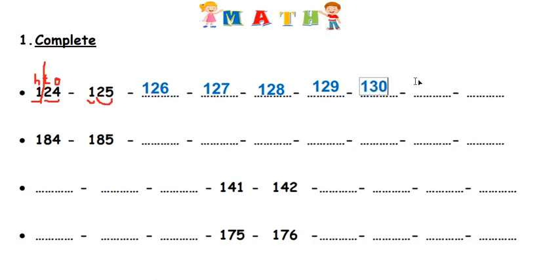Since after thirty I have thirty-one, so here it's one hundred thirty-one. And after one hundred thirty-one it's one hundred thirty-two.